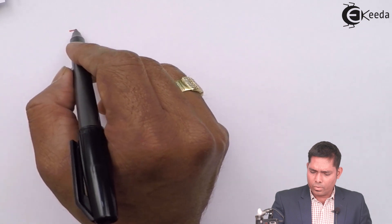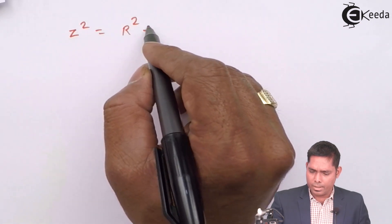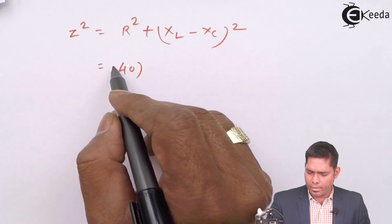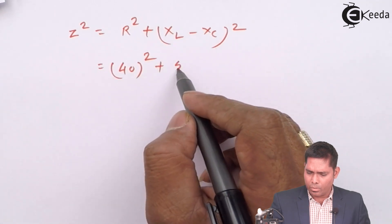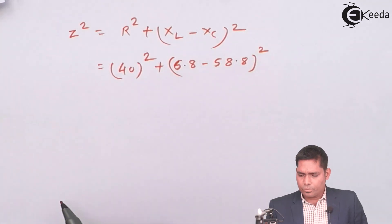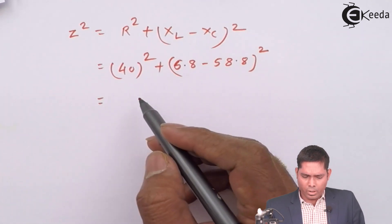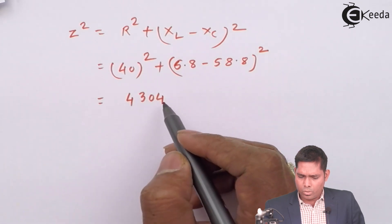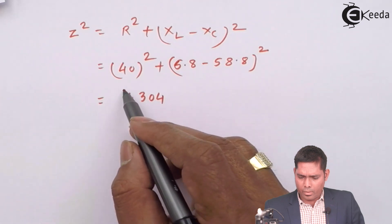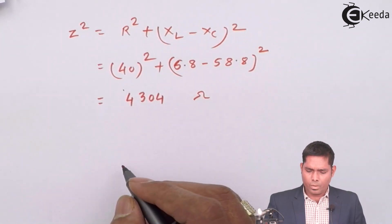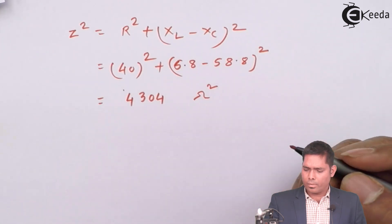So Z square from here I will get. Z square is R square plus XL minus XC the whole square, which is 40 square plus this is coming out to be 6.8 and that is coming out to be 58.8 the square. If I go for the calculation this comes out to be 4304 square. So I will take this value. It is in ohm square. This will be in ohm square.